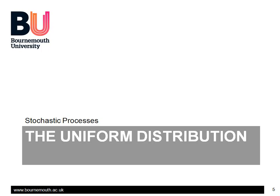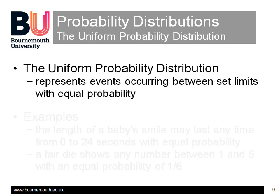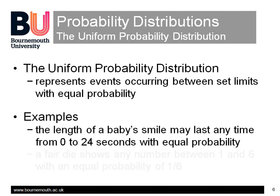Starting then with the uniform distribution, this is the one for which there's an equal probability of an event occurring between two given limits. For example, a baby smile, apparently, may last any equally probable time between 0 and 23 or 24 seconds until other bodily functions or stimuli take over.